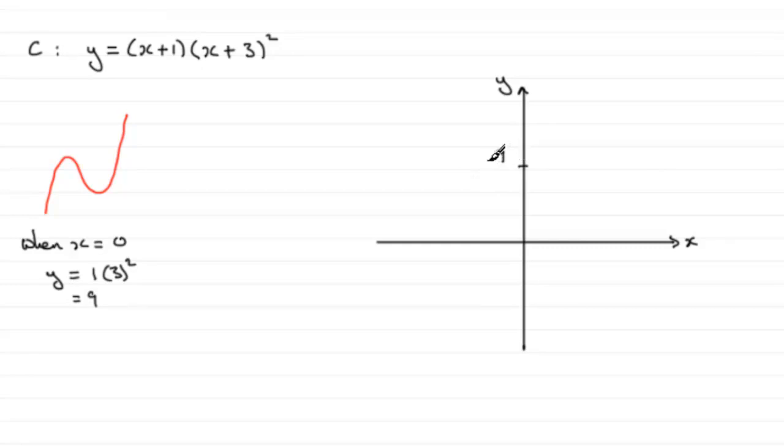Now, the other thing is, where does it cross the x-axis? Well, it crosses the x-axis when y is 0. And when y is 0, you've got 0 equals x plus 1, all multiplied by x plus 3, all squared. So therefore, any of these factors here could equal 0. So either x plus 1 equals 0, leading to x equals minus 1, or x plus 3 equals 0, leading to x equals minus 3.